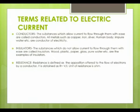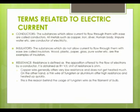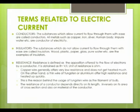Resistance is defined as the opposition offered to the flow of electrons by a conductor. It is given by R = V / I. The unit of resistance is ohm. Copper wire generally offers very low resistance and does not get heated much. On the other hand, a thin wire of tungsten or aluminum offers high resistance and heats up quickly. This is the reason tungsten wire is used as the filament of a bulb. The resistance of a conductor depends directly on its length, inversely on its area of cross section, and also on the material of the conductor.